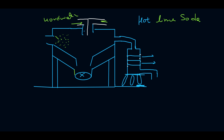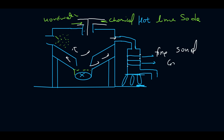In the hot lime soda process, steam is inserted from here. Hard water enters from the side chamber along with chemicals. The steam is useful to stir the hard water and chemicals together. All the sludge settles down, and the soft water starts moving upward, entering a zone of fine sand particles and gravels.